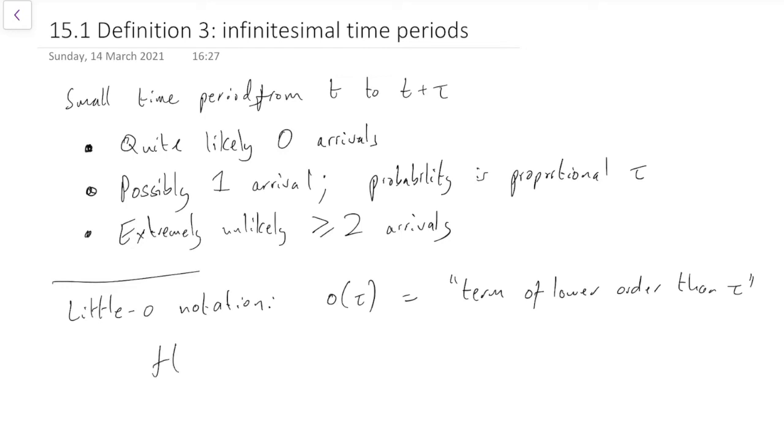The formal definition here is that if we have some function, we say it's little o of tau if it tends to zero, but it tends to zero even if we divide it by the very small tau. And this is as tau tends to zero because we're considering very small amounts of time.